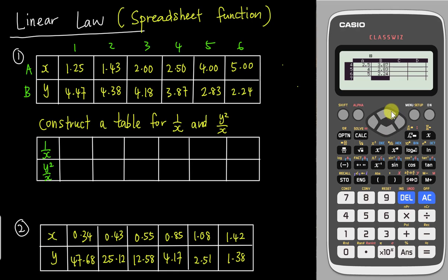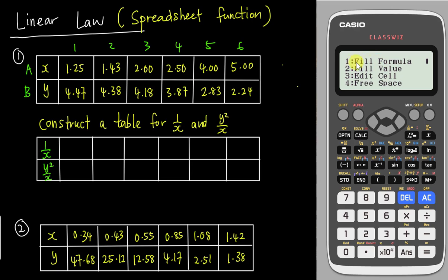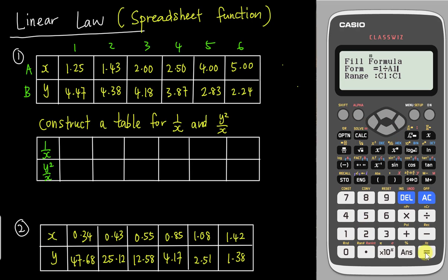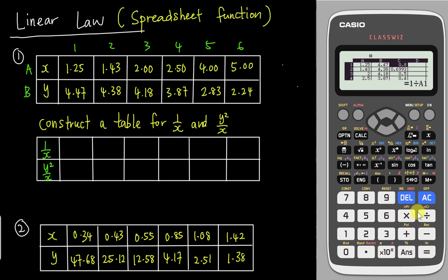After inserting both sets of numbers, go to column C and tap the option key, then choose number 1 — Fill the Formula. Here you tell the calculator you want to do 1 divided by x, and your x is column A. So enter the formula as 1 divided by A, using Alpha A. Set the range from C1 to C6 and tap Enter. The calculator will compute all the values for you.